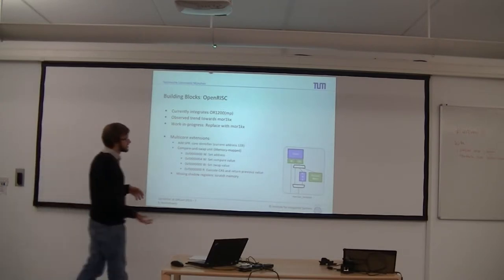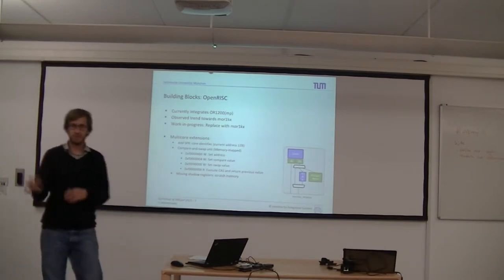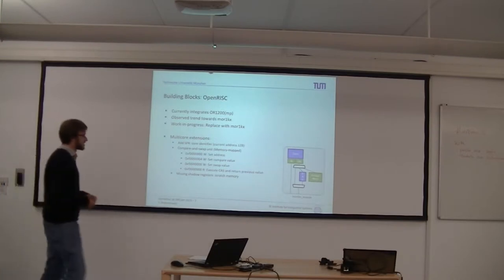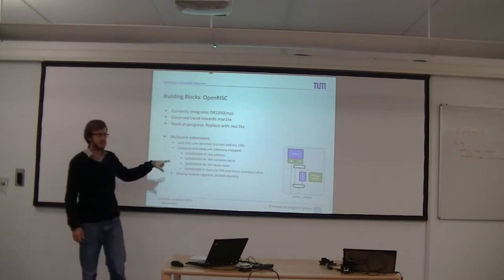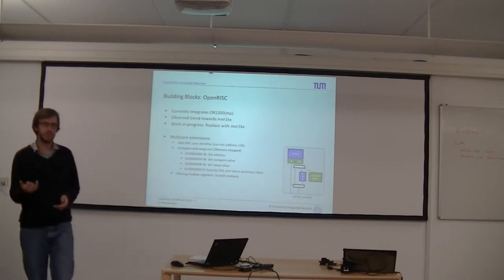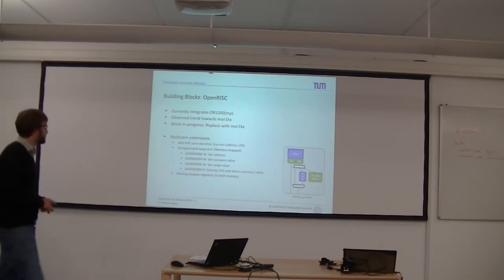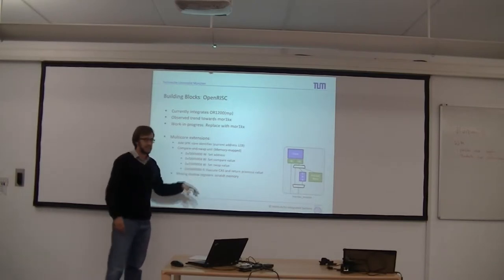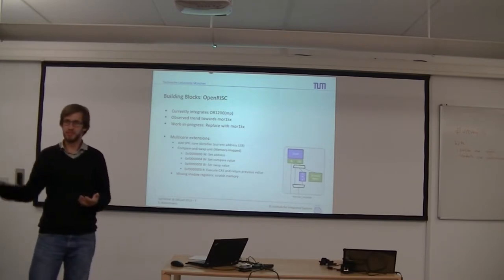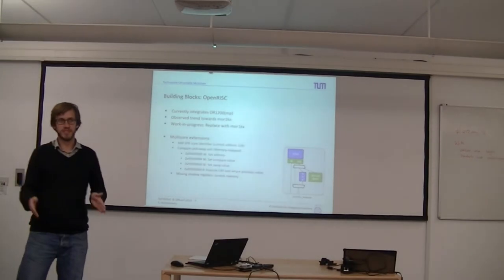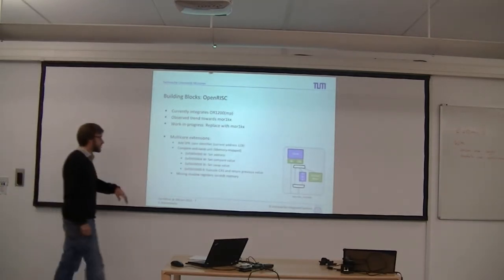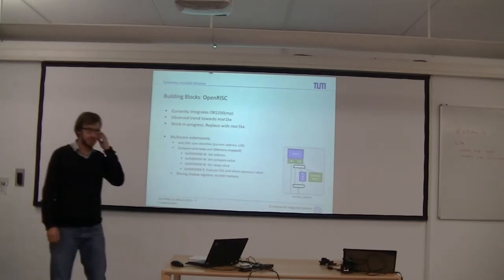We also need a way to do atomic transactions — this is not in the OpenRISC 1000 SPR at all. The first assembler I ever wrote in my life was this compare-and-swap instruction. It works like a memory-mapped device: you set the address, you set the compare value, you set the swap value, you do a read, and it performs the atomic operation. This whole sequence has to be guarded against interrupts or context switches.